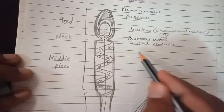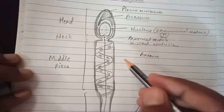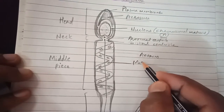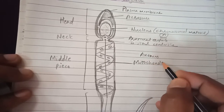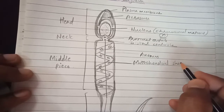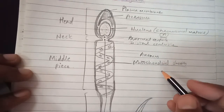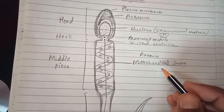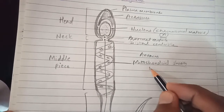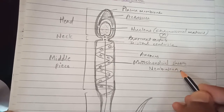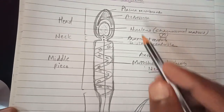This is the distal centriole, which forms the axoneme — the central filament. And this is the mitochondrial sheath, also called the nebenkern. The term nebenkern may also be expected for one mark, as may the function of the acrosome.